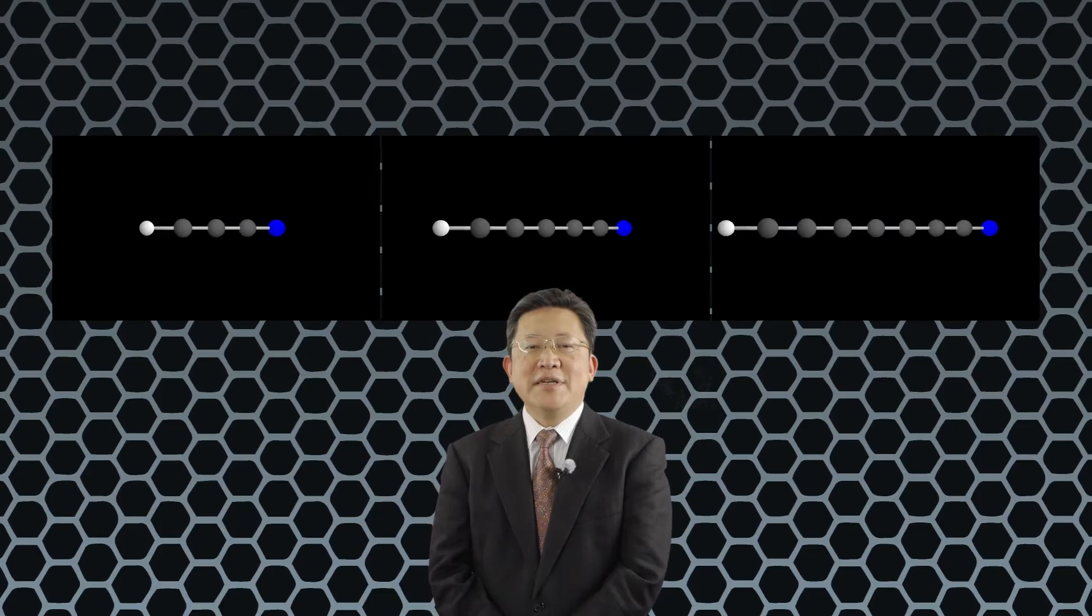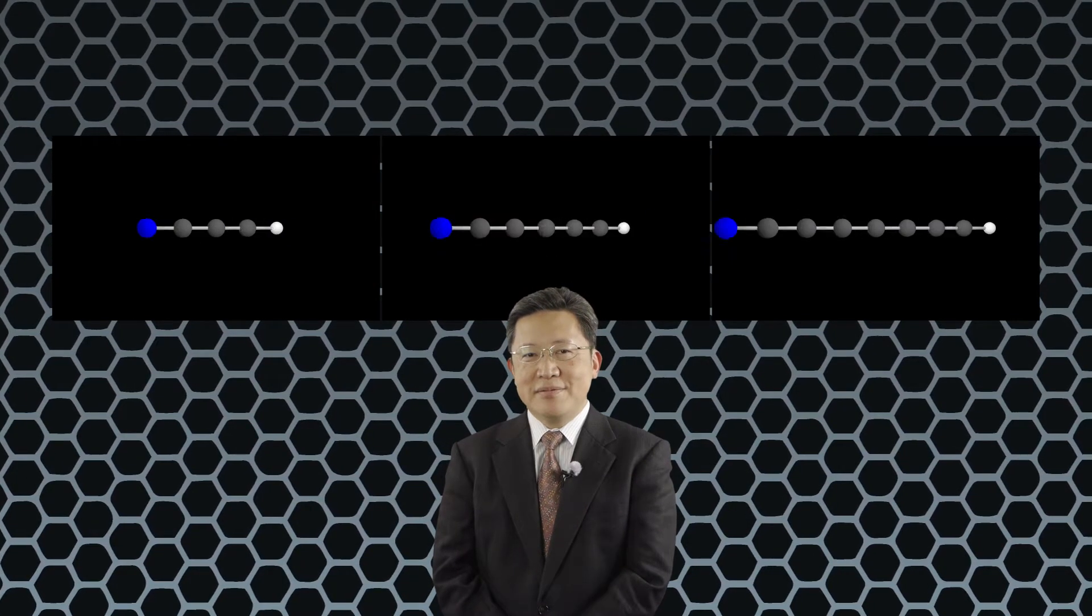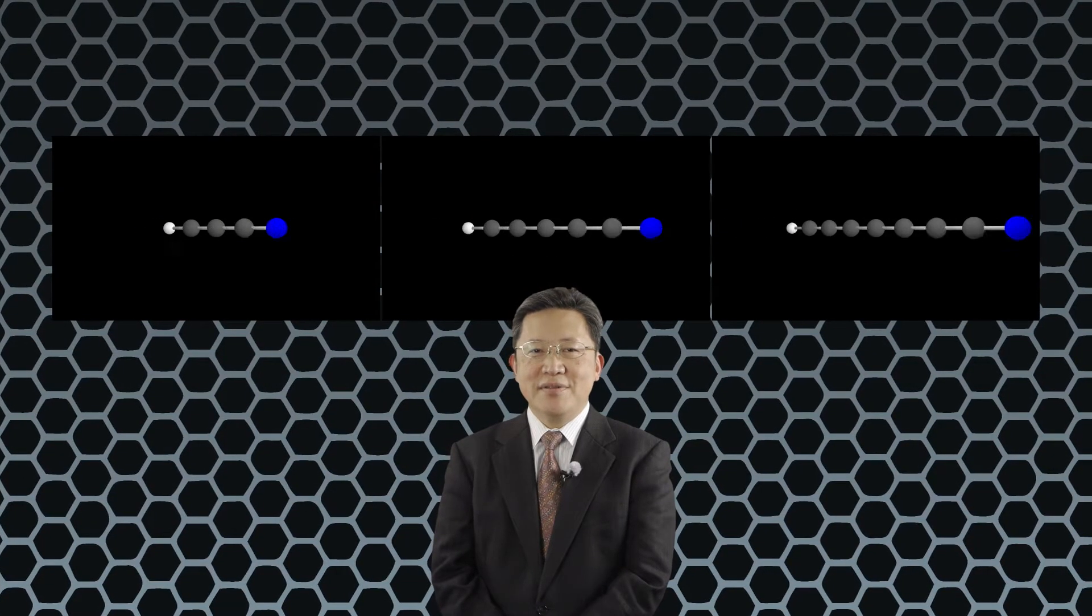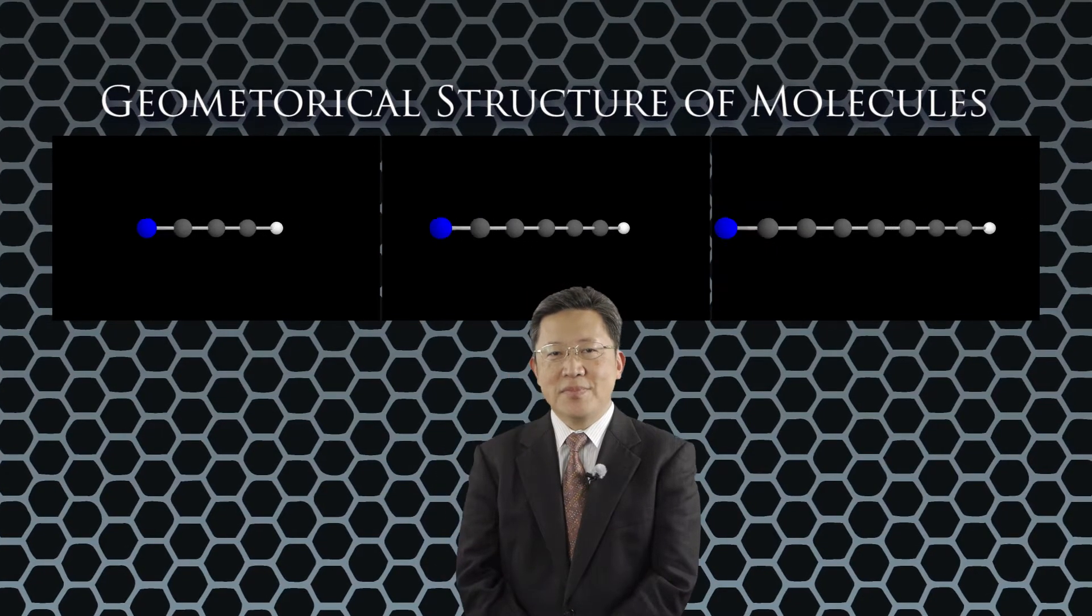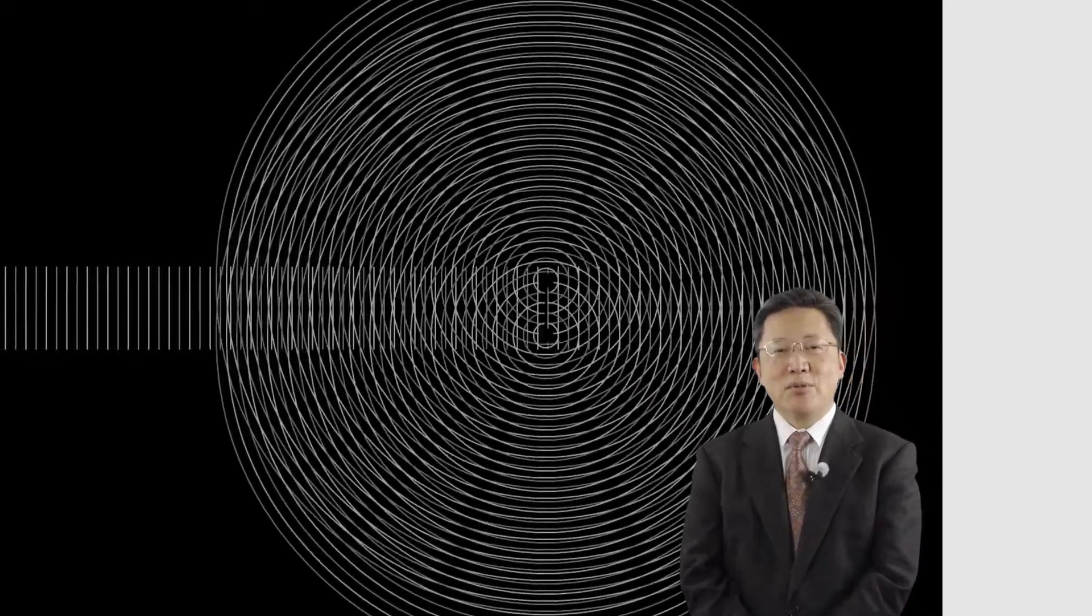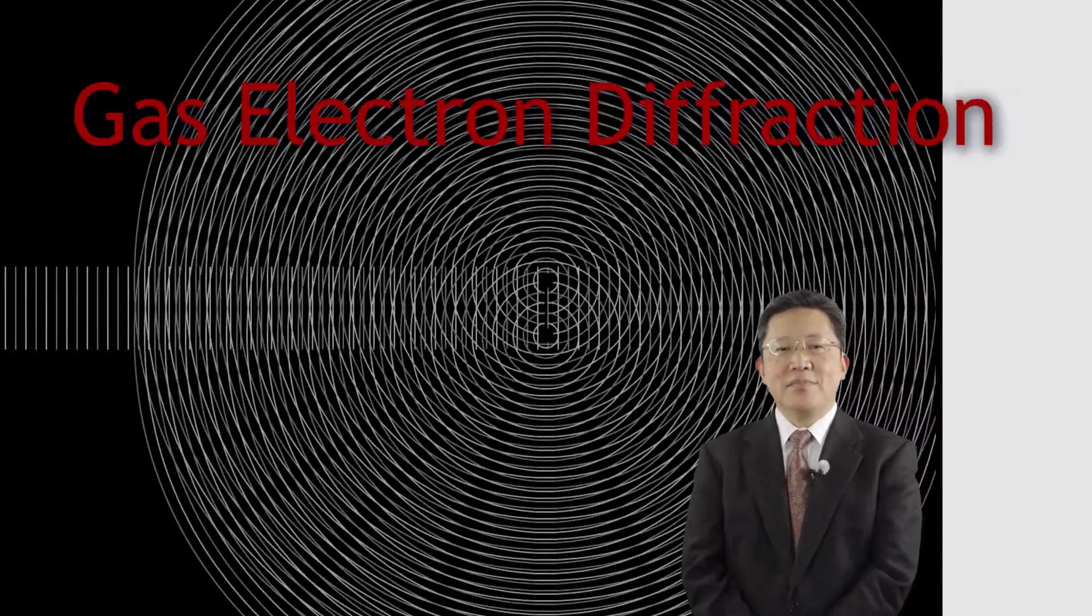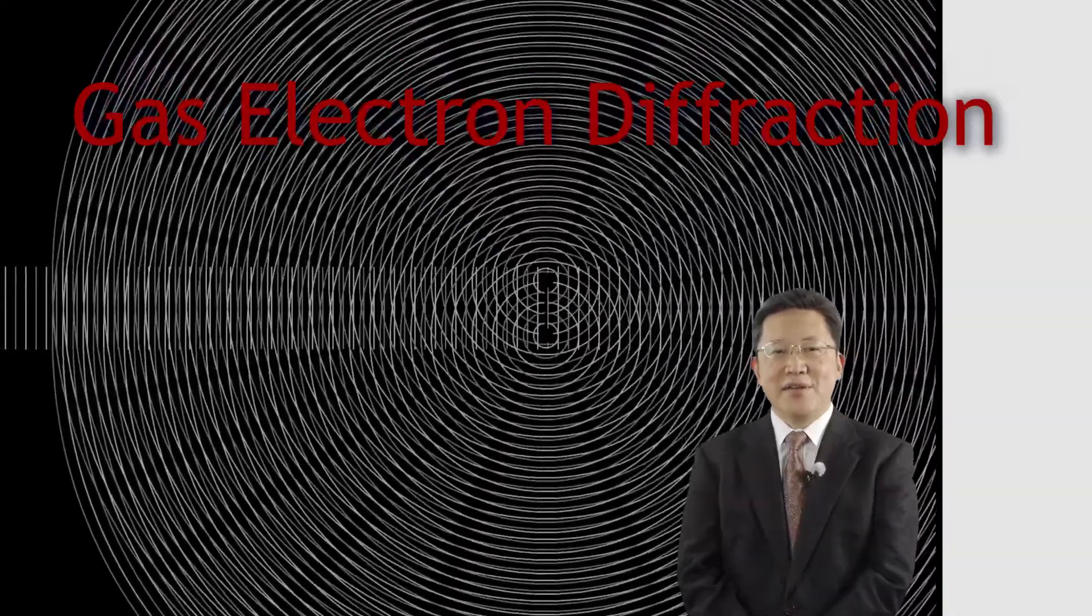From the analysis of the microwave spectra, we can determine the geometrical structure of molecules. But there is another method to determine geometrical structure of molecules. The method is gas electron diffraction.